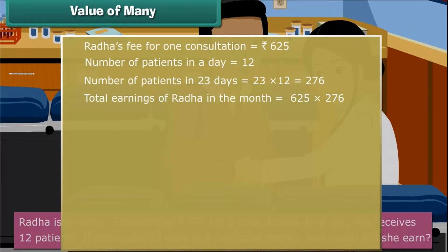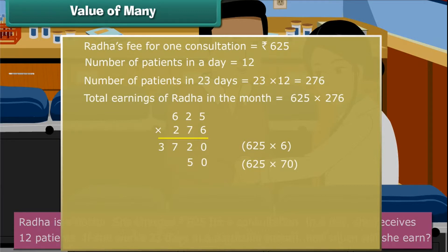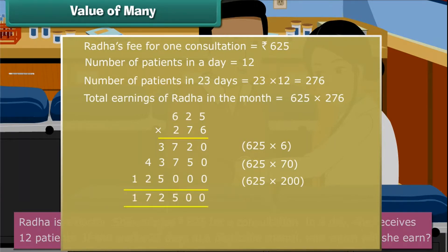Let us learn another technique of multiplication. First, we multiply 625 by 6, then we multiply 625 by 70, and finally we multiply 625 by 200. We add the three products to get 1,72,500 rupees. Therefore, Radha earns 1,72,500 rupees.